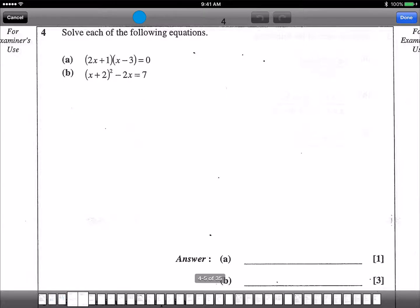Now because it's only equal to zero, this is equal to zero. So part (a), you can simply put 2x plus 1 equals 0, or x minus 3 equals to 0. So 2x equals to negative 1, x equals negative half.